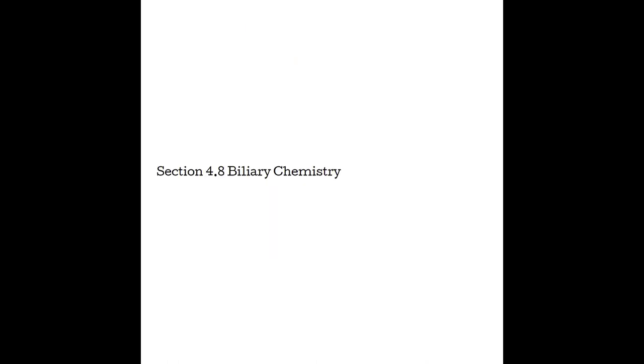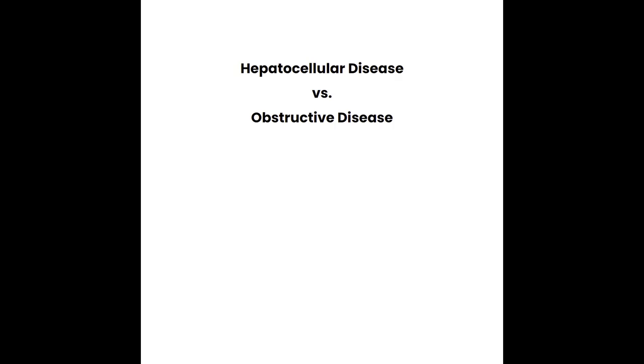Section 4.8, biliary chemistry. There are no lab tests that specifically target the gallbladder, but liver chemistry tests related to bilirubin can indicate what's going on. There is an important distinction between hepatocellular disease — where hepatocytes are unhealthy — and obstructive disease, where the bile ducts become blocked. In biliary disease, blockages cause byproducts to spill back into the blood, which is toxic. This is typically obstructive disease and will usually require surgery to relieve the obstruction.